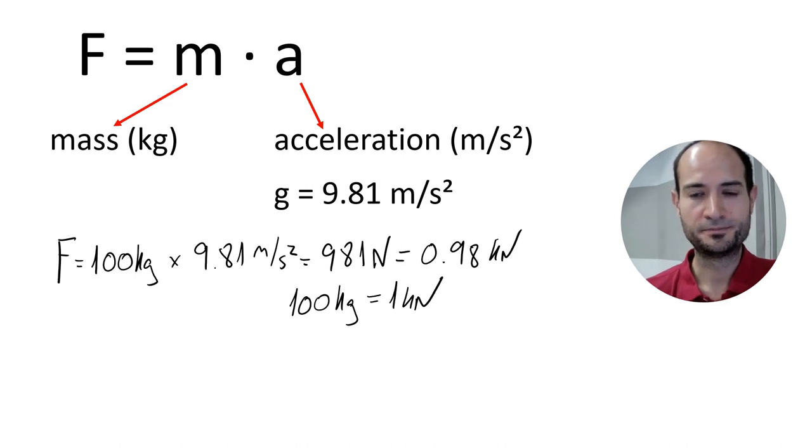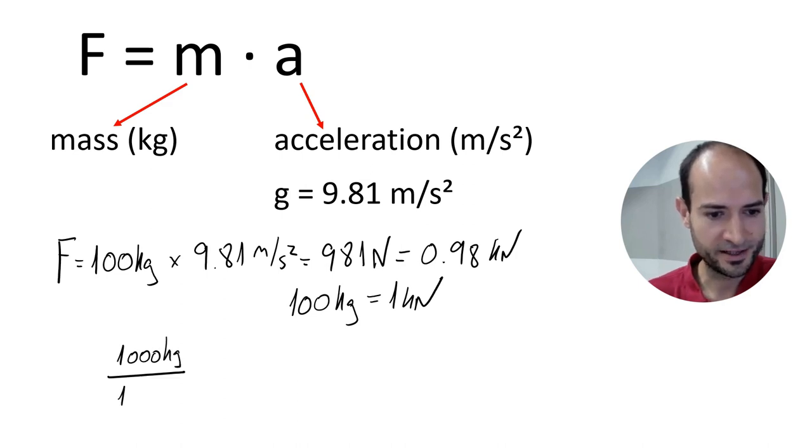So, for example, if they want to put 1 ton on the scaffold, so, 1,000 kilograms, we divide it by 100, kilograms per kilonewton, and that's 10 kilonewtons. That's it.